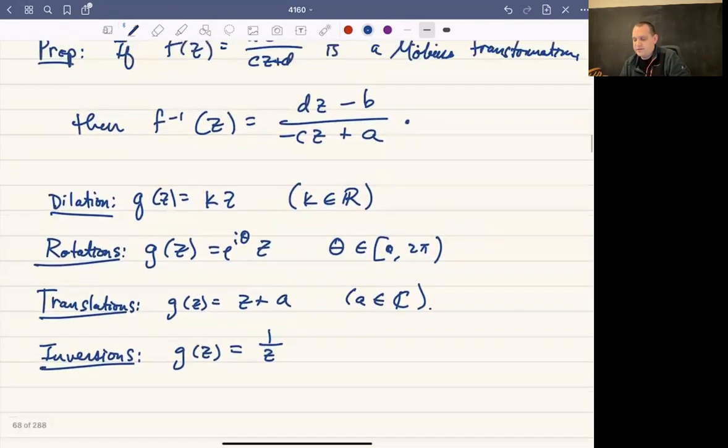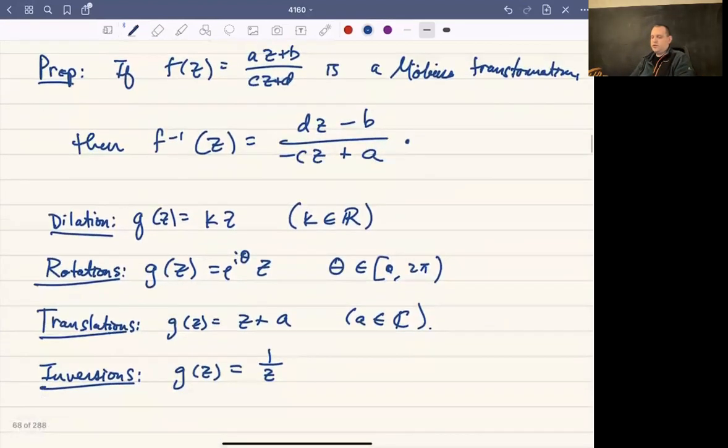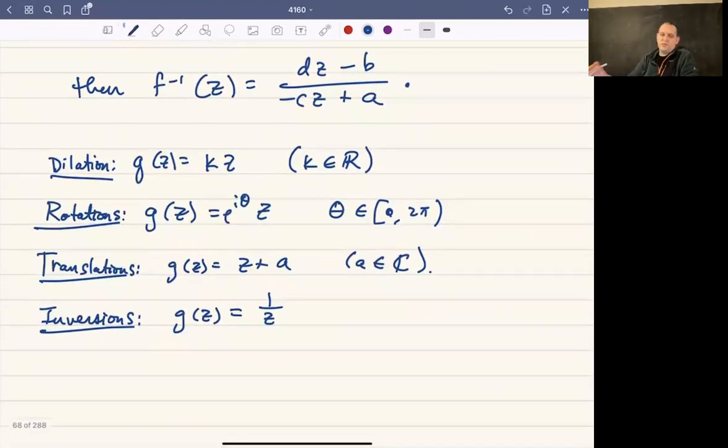So if c is equal to 0, then you have to do something else. If c is not equal to 0, you can write every Mobius transformation as a composition of these maps in a certain way. The book does it very nicely. It's probably even too much to call it an algebra exercise. You just distribute a few things, check that everything works out, and that's fine. So every Mobius transformation is a composition of these types of curves.